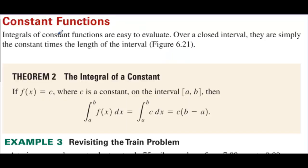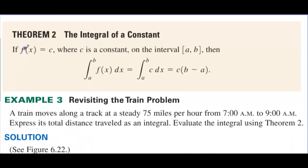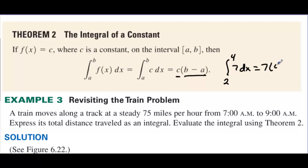Constant functions: integrals of constant functions are easy to evaluate. Over a closed interval, they are simply the constant times the length of the interval. If f of x equals c, a constant on the interval a to b, then the integral equals c times (b minus a). So the integral from two to four of seven dx equals seven times (four minus two), which gives two sevens, or 14.